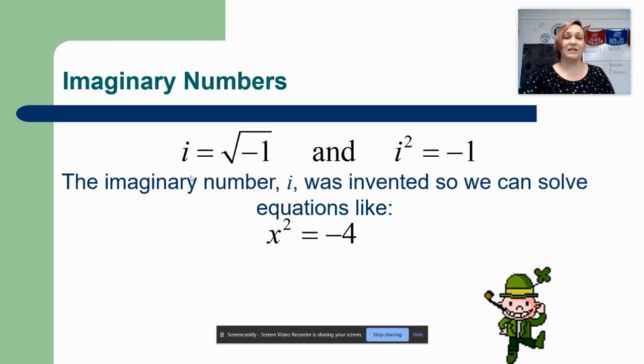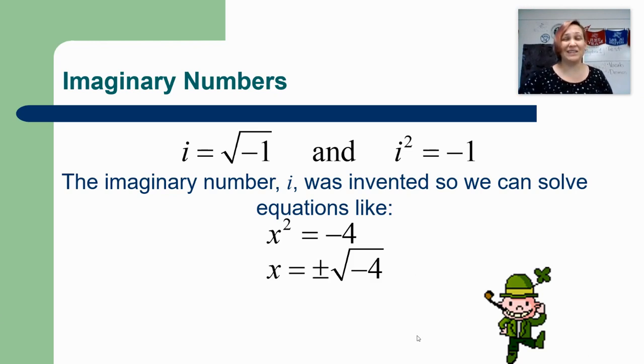Imaginary numbers exist to solve a problem like this: x² = -4. Normally we would square root both sides and then we would stop here and say 'oh can't do it, I don't know the square root of a negative' and we would just stop doing the problem.